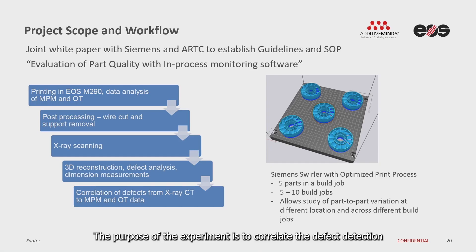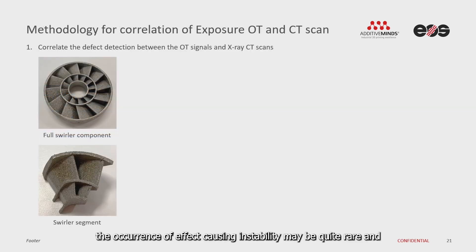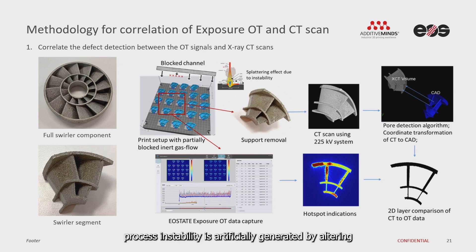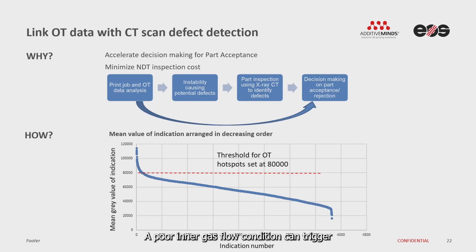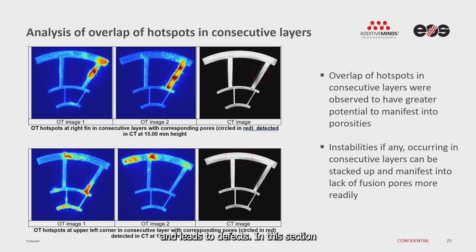The purpose of the experiment is to correlate the defect detection between the OT signal and X-ray CT scans. Under normal operating conditions, the occurrence of defect-causing instability may be quite rare and thus require a large number of print jobs. Instability is artificially generated by altering the inert gas flow at a specific region of the build platform. A poor inert gas flow condition can trigger smoke plume and sputtering effects, which in turn can lead to defocusing of the laser beam, causing improper melting on the powder bed and resulting in defects.